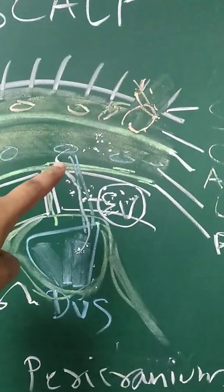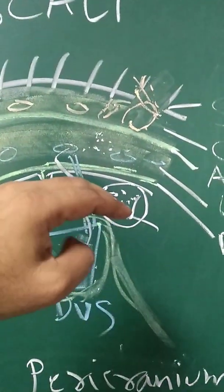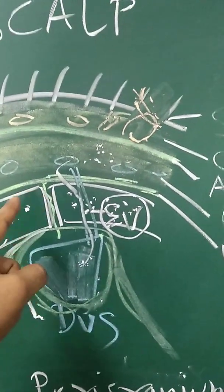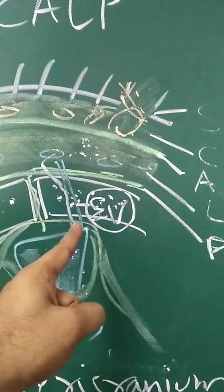Pericranium is the fifth layer of the scalp. This pericranium covers and encloses the bone, the skull cap, in such a manner it will dip between the two adjacent bones as the suture ligament and becomes endocranium.